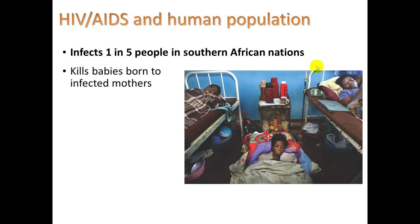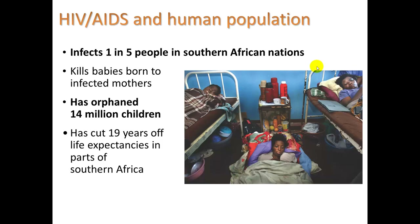It kills babies born to infected mothers. It has orphaned 14 million children who now have no parents. And it has cut 19 years off life expectancies in parts of southern Africa — this has profound influence on a population. You're basically losing your young people, who are the driving force for change happening within countries.